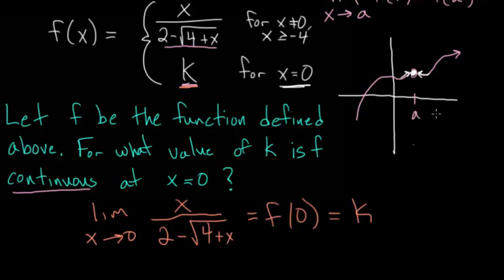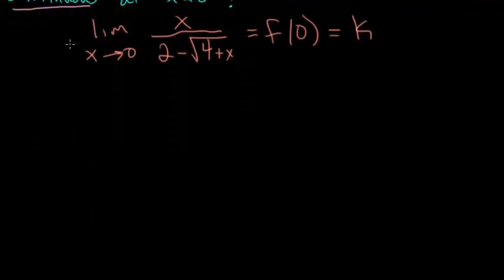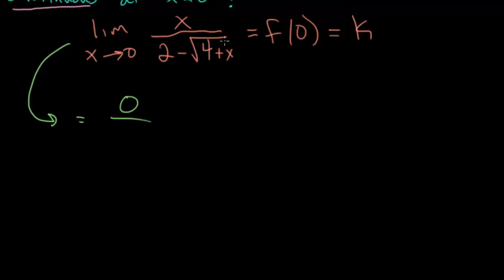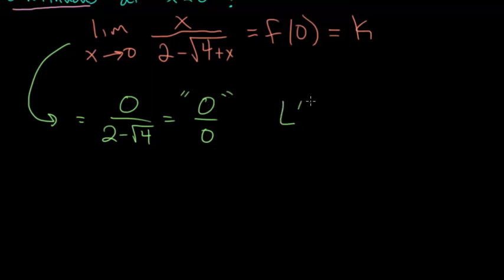To evaluate this limit, let's start by plugging in 0 for x. We get 0 in the numerator and 2 minus the square root of 4 plus 0, which is 2 minus the square root of 4, or 2 minus 2, giving 0 in the denominator as well. So we end up with the indeterminate form 0 over 0, and we can apply L'Hôpital's rule.